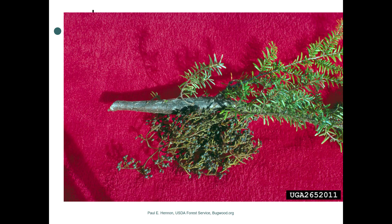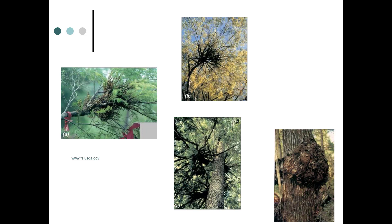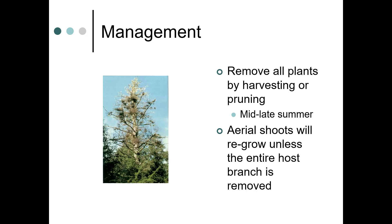Here we have hemlock dwarf mistletoe on hemlock, and here's the damage it causes. Managing this is done by removing all plants by harvesting or pruning, typically mid to late summer. Aerial shoots will regrow unless the entire branch is removed, so if you're going to try to remove it, you'll want to take the whole branch — hopefully well behind the visible damage.